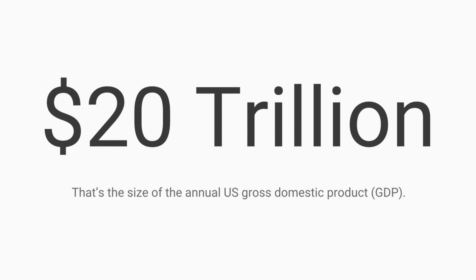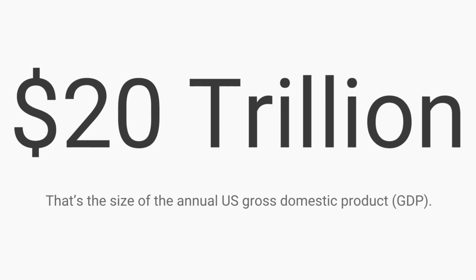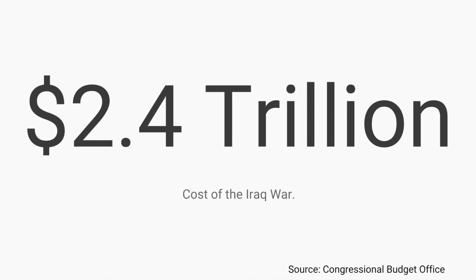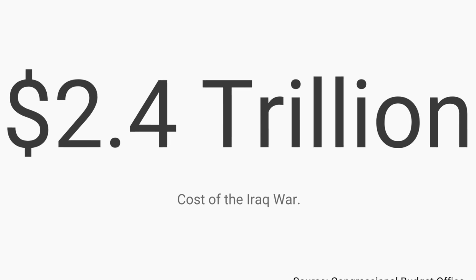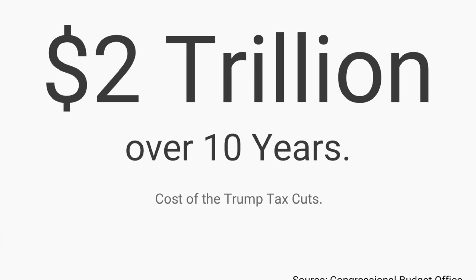Before we get into the specific calculations, it might be helpful to warm up with some context setting. The first number is the size of the US economy — a 20 trillion dollar economy. Whenever you think about how much a government program or tax cut costs, think about the context that this whole economy is worth 20 trillion. The cost of the Iraq war was about 2.4 trillion according to the Congressional Budget Office, and the recent Trump tax cuts are estimated to cost about 2 trillion over the next 10 years.